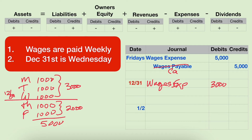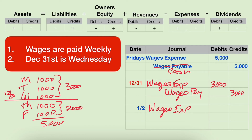We'll credit wages payable — not cash — because it's not payday. The employees will not even know they have been part of an adjusting entry. Then on January 2nd, let's say, which is payday, we need to recognize the other two days. We'll debit wages expense for those two remaining days of the week, and then debit wages payable to eliminate the liability we just established two days ago, and credit cash like normal.